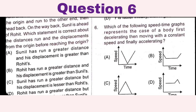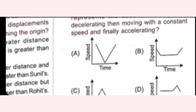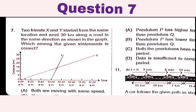Which speed-time graph represents a body first decelerating, then moving with constant speed, and finally accelerating? Decelerating means speed decreases, constant means flat, then accelerating means speed increases. The correct graph shows first a decrease, then a flat line, then an increase. Option B is the right option.